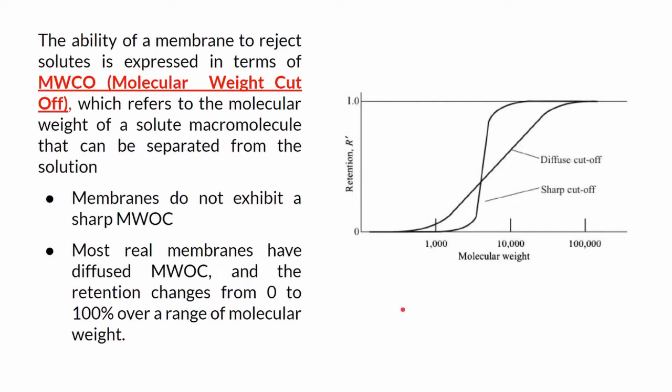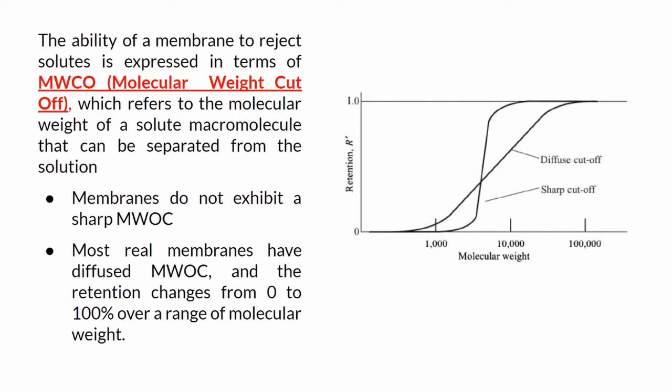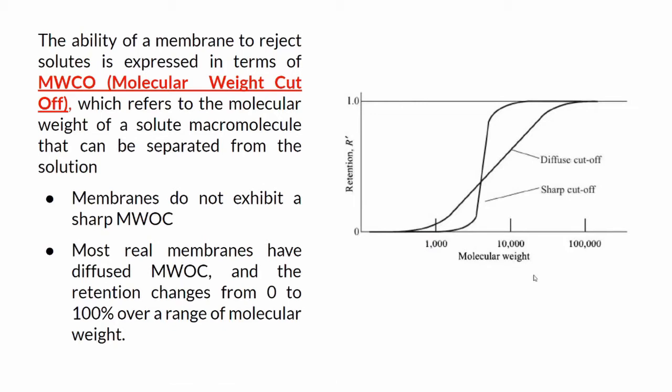We can define rejection alternatively as molecular weight cutoff or MWCO, which refers to the molecular weight of a solute macromolecule that can be separated from a solution. In general, membranes don't exhibit a sharp MWCO. The graph taken from Datta's textbook shows a comparison between sharp cutoff membranes and diffuse cutoff membranes. For sharp cutoff membranes, the fractional retention almost changes as a step function. Within a small molecular range, the retention value changes from 0 to 1.